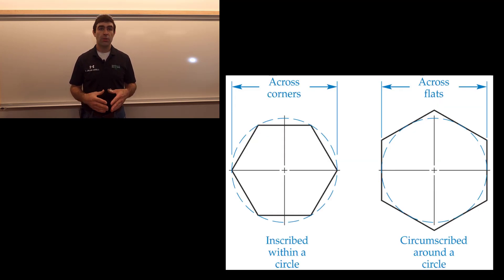There's two ways to describe one of these, circumscribed and inscribed. If the circle, the imaginary circle, that describes the regular polygon is totally within the polygon, it's known as circumscribed or across the flats. This is the dimension you need to know if you have a hex bolt and you want a wrench to fit it.